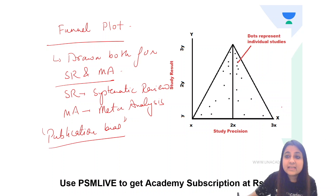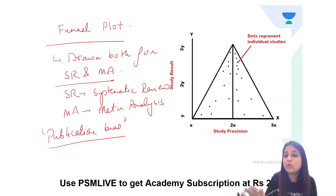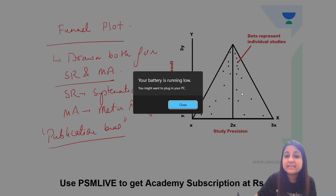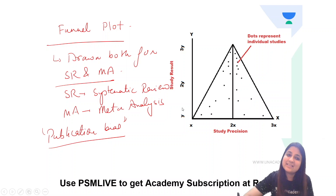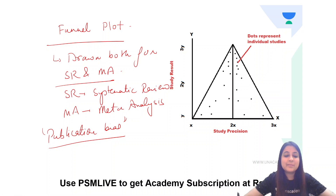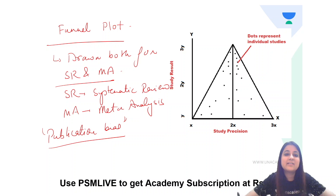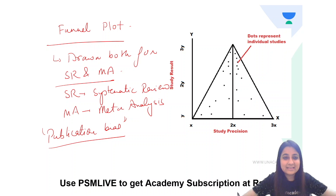These dots represent individual studies. When they are scattered, it means no publication bias. But when they are clustered at one end, it means publication bias is present. Please remember, it's drawn both in systematic review as well as meta-analysis. Thank you so much.